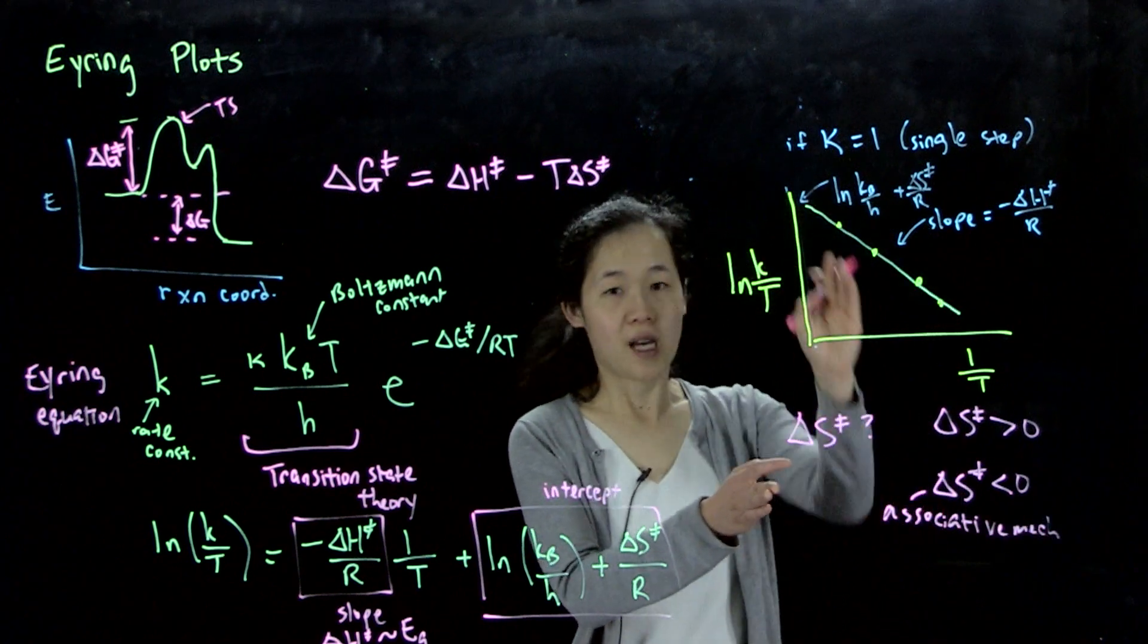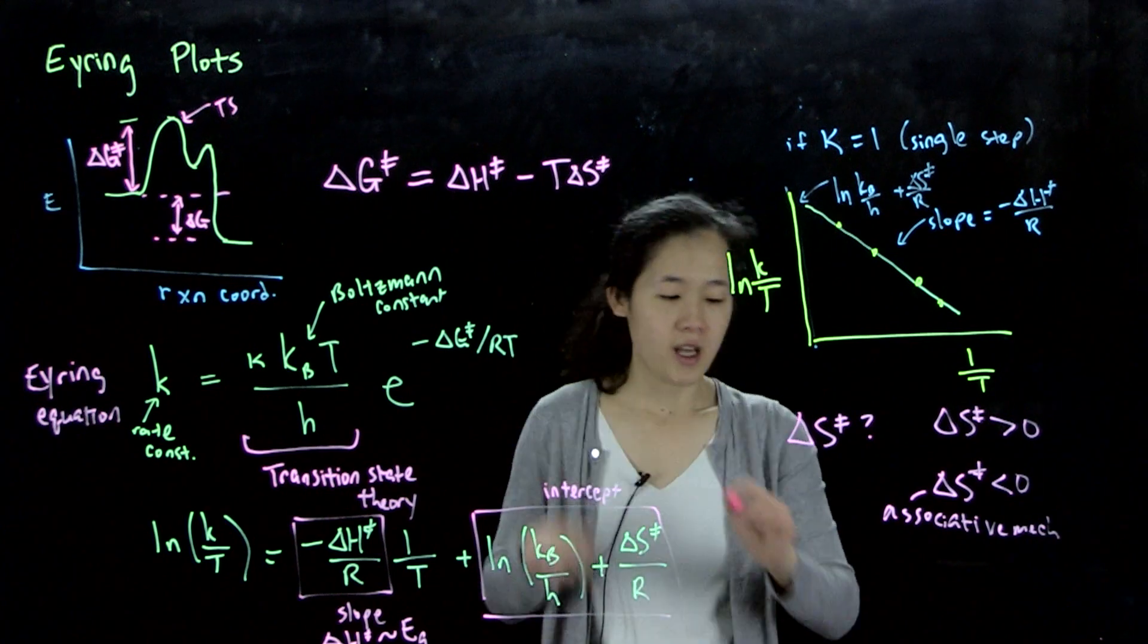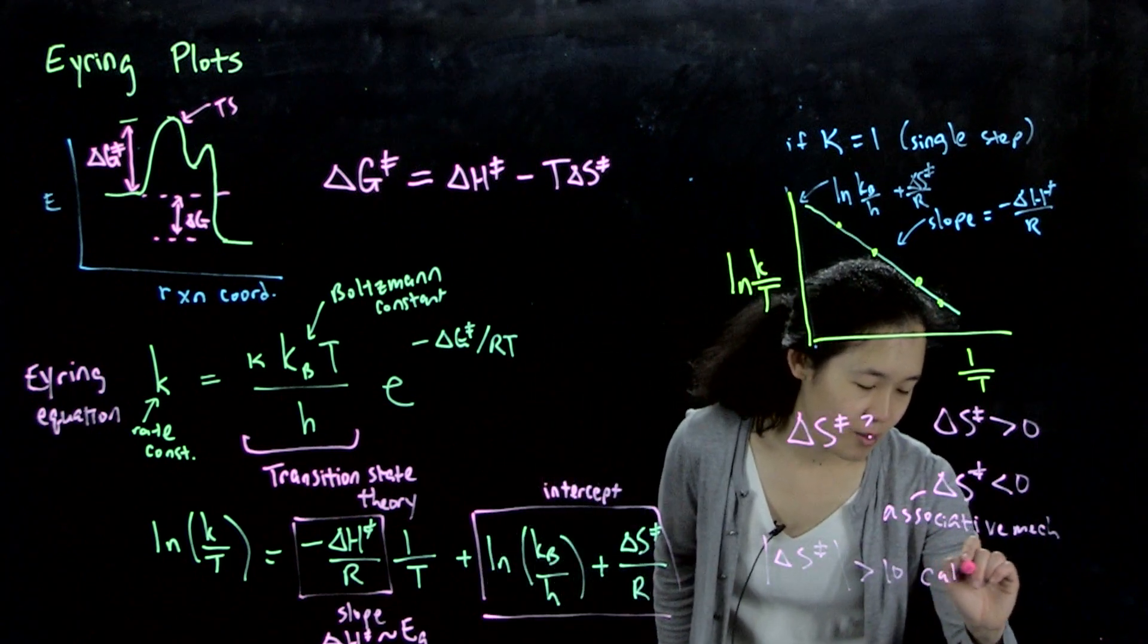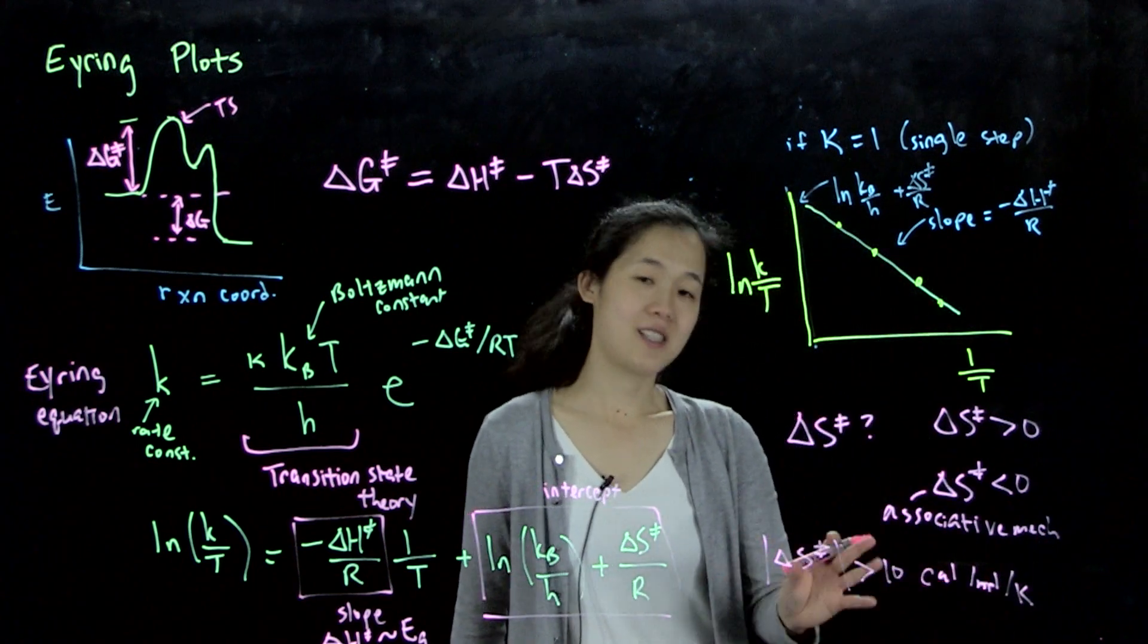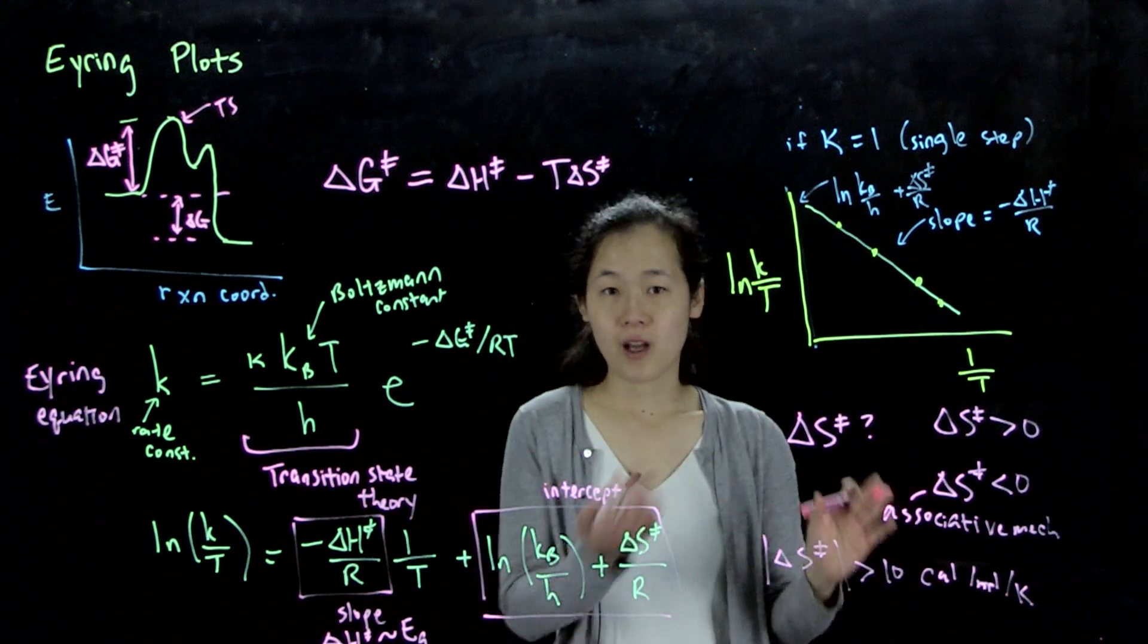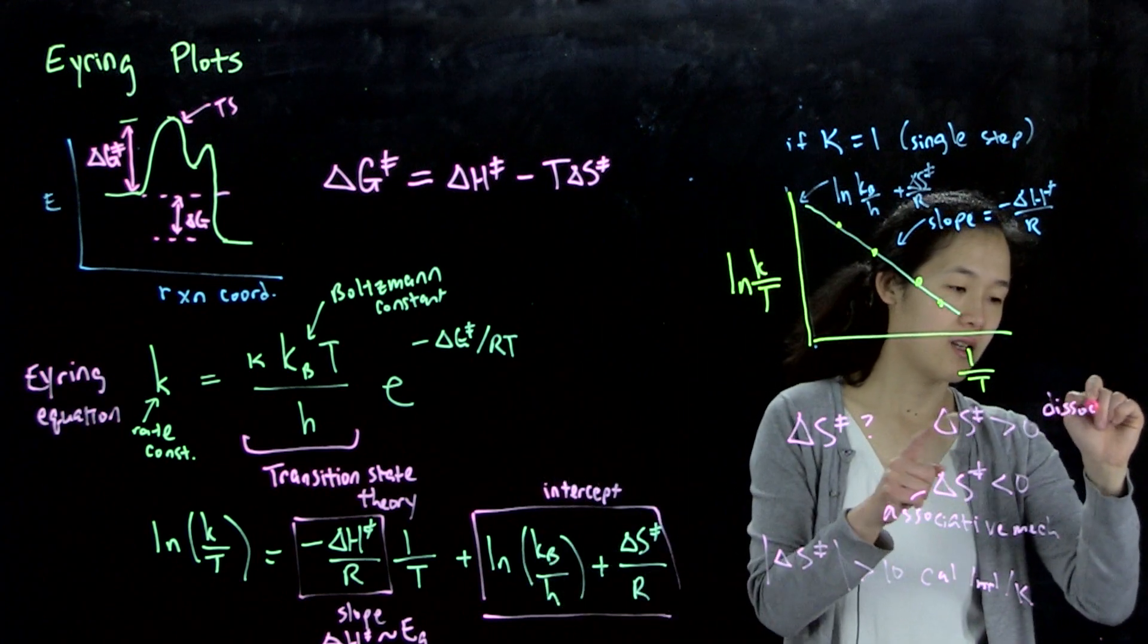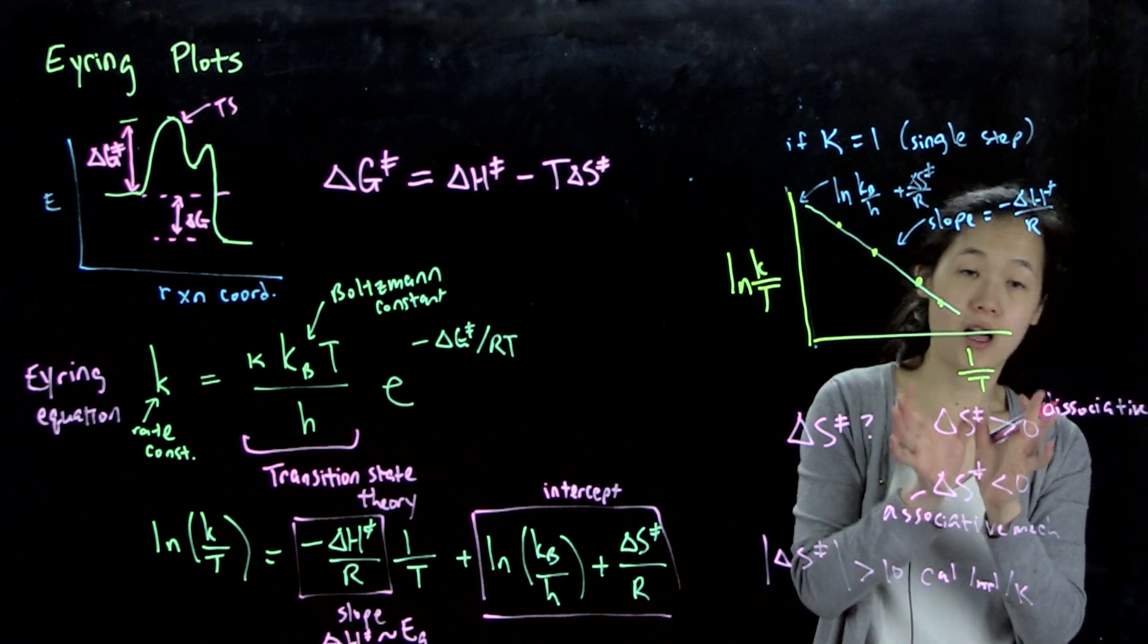Typically, although these delta S double dagger that you get from the Eyring plots are actually quite small in magnitude, so sometimes they're not considered very trustworthy. So typically, you want delta S double dagger to be greater than 10 cal per mole Kelvin. But if the magnitude of this is greater than that, then you have a trustworthy delta S double dagger that gives you good information about the nature of our transition state. So you can then figure out whether you have an associative or dissociative mechanism. So this might be more consistent with dissociative, like an SN1, for example, where your transition state is something that's kind of falling apart. So that might be entropy increases.